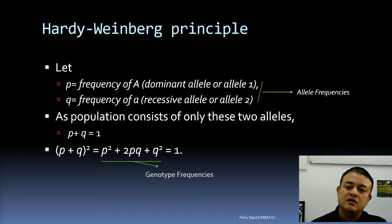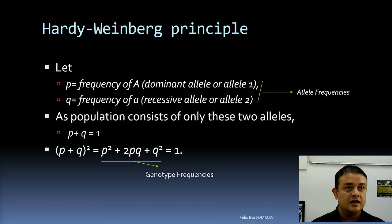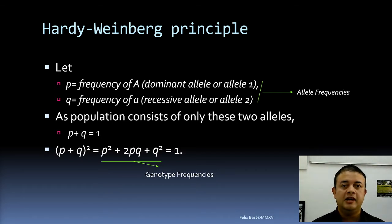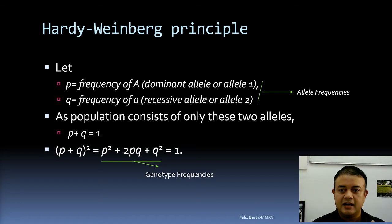So p plus q always equals one. If the frequency of p is 30%, then q must be 70%, because together they make 100% — or in probability terms, if p is 0.3, then q is 0.7, which is 1 minus 0.3.